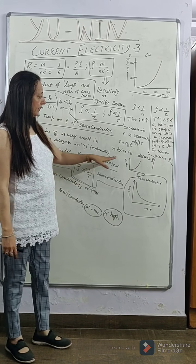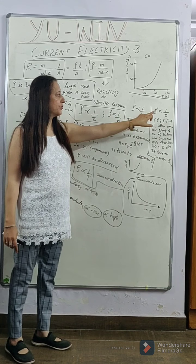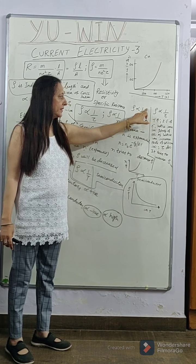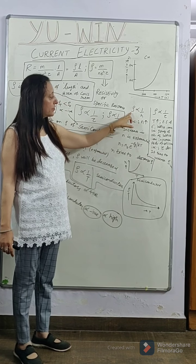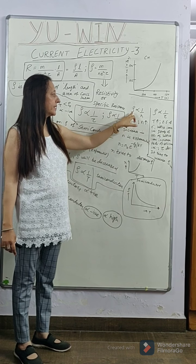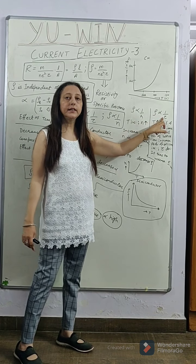In the nutshell, what we conclude is that the resistivity depends on two factors, that is the number density and relaxation time. Although the dependence of resistivity on both of them is inverse, like resistivity depends inversely on the number density as well as on the relaxation time.